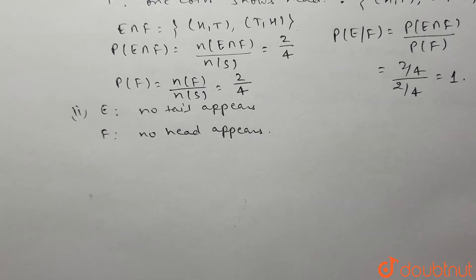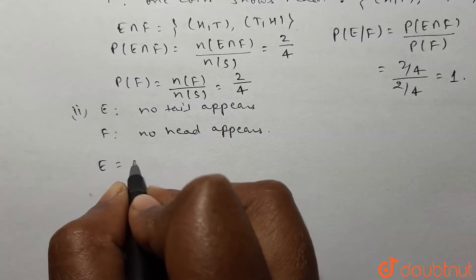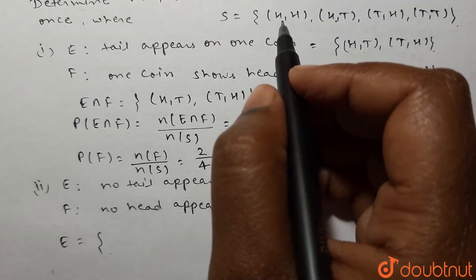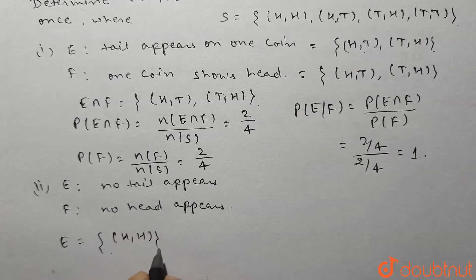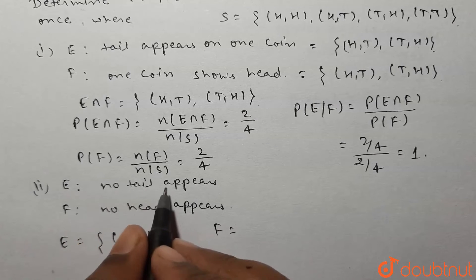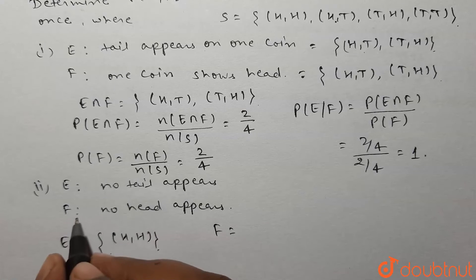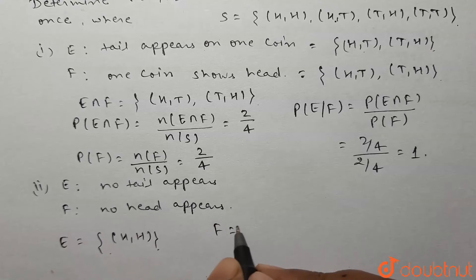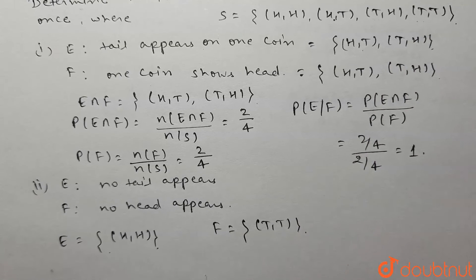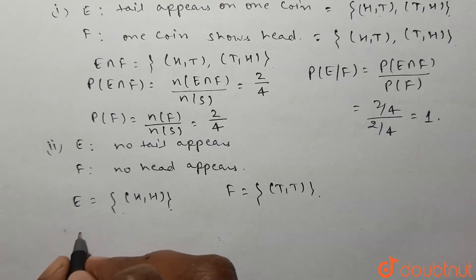In the second part, event E is no tail appears, and event F is no head appears. Event E contains elements where both coins show heads, so E = {H,H}. Event F is no head appears, meaning both coins show tails, so F = {T,T}.